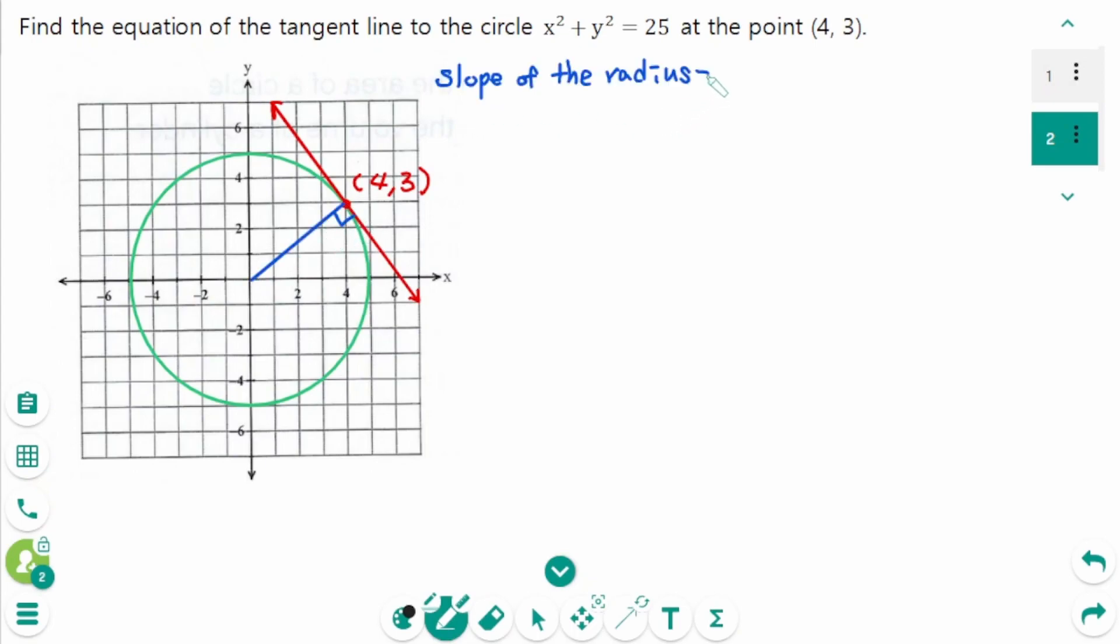Slope of the radius is, there's two points, y2 minus y1 over x2 minus x1, so 3 minus 0 over 4 minus 0, which is 3 over 4.